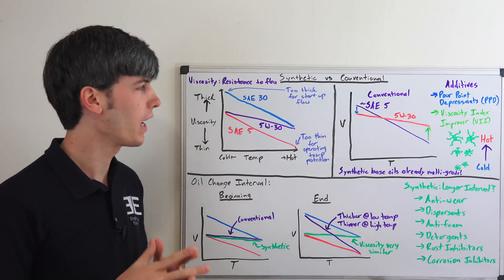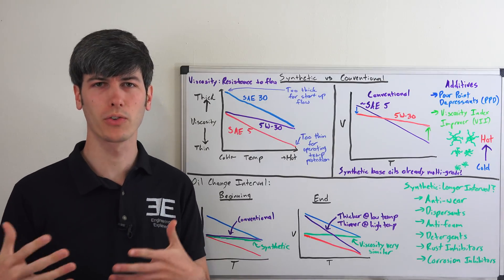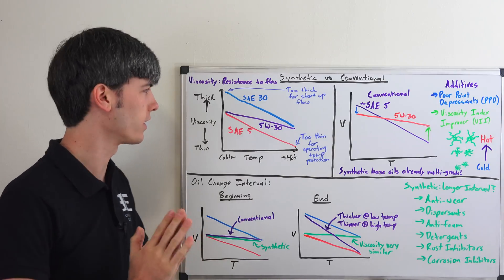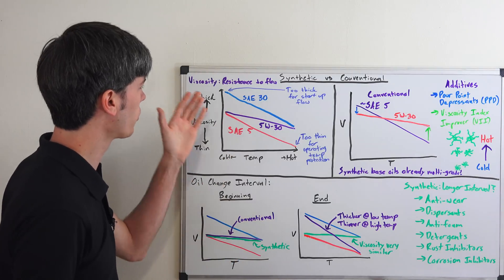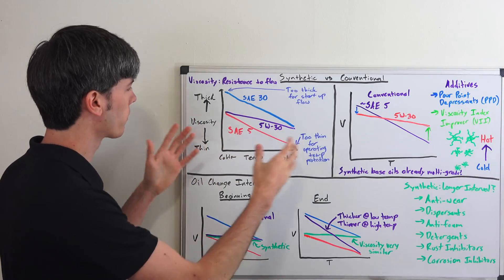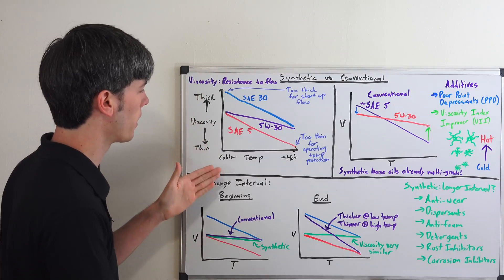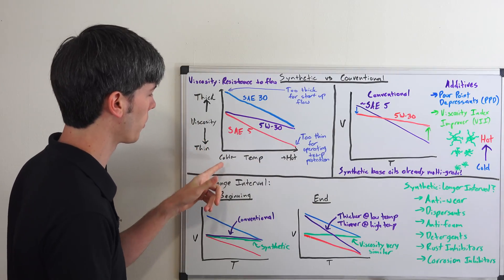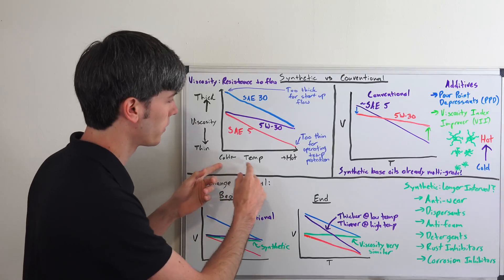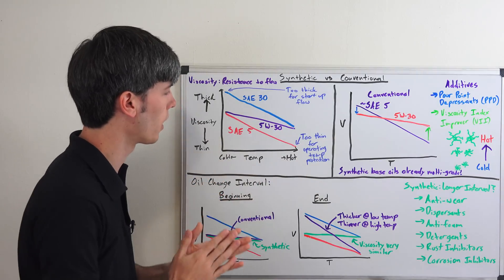Now 30 is obviously higher than 5 so it may seem that at higher temperatures the oil is going to be thicker but that's obviously not the case as things thin out as they heat up and so it's helpful to look at a plot of kind of what we're talking about here. So here we have viscosity, thicker at the top, thinner at the bottom. Here we have temperature, cold, you know around 0 degrees Celsius versus hot, you know around 100 degrees Celsius.